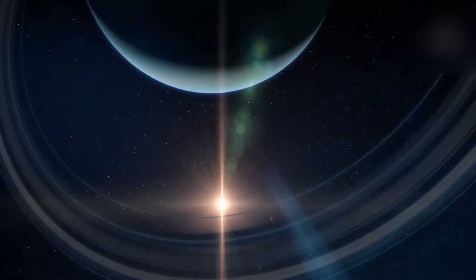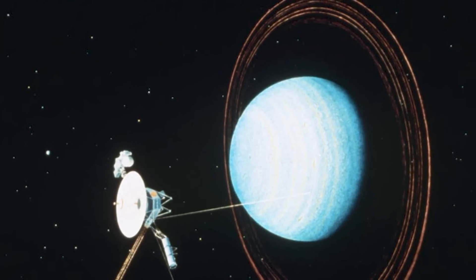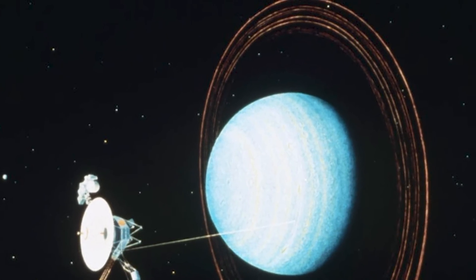Nine are classed as the main rings of the planet, and two are the fainter dusty rings, such as the diffuse zeta ring closest to the planet that weren't discovered until the 1986 flyby of Voyager 2.